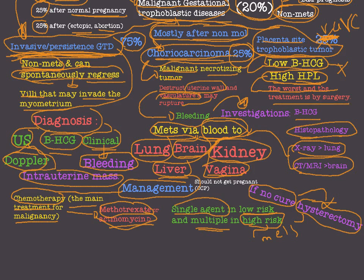Placental site trophoblastic tumor is the worst type, and the only treatment is surgery — radical hysterectomy with bilateral oophorectomy. Survival beyond two years is poor. Patients present with vaginal bleeding like the previous two types. Diagnosis is by ultrasound and histopathology. In addition to surgery, chemotherapy and radiotherapy are also introduced, but the prognosis is very bad.